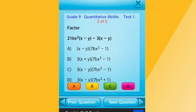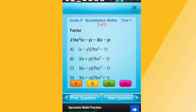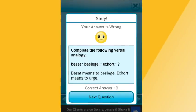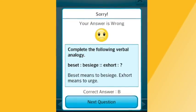If you answer a question wrong, the correct answer with detailed explanation is displayed so that you can learn where you went wrong. At the end of each practice test, the app displays your score.